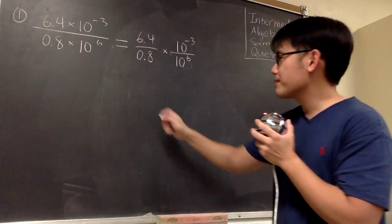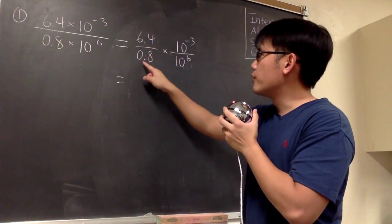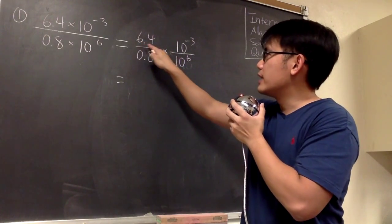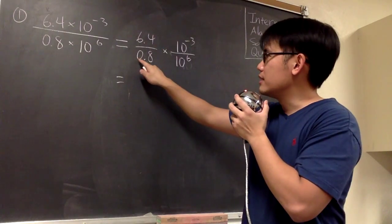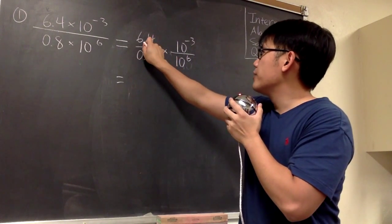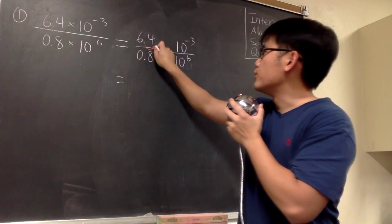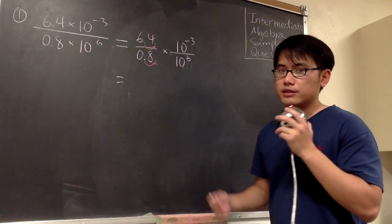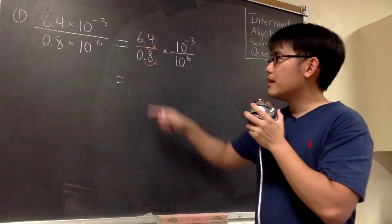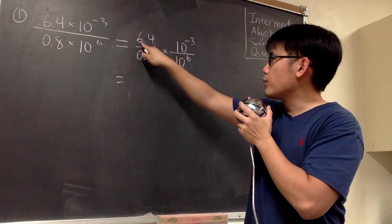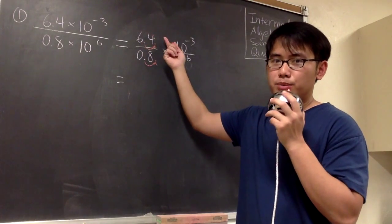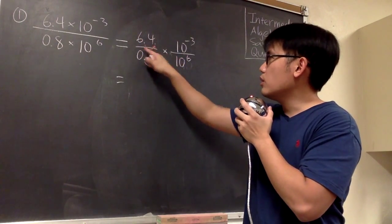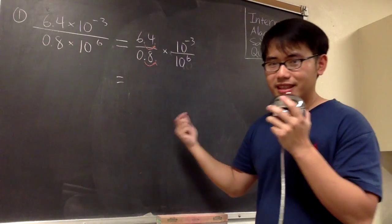Anyway, to finish this up, we first focus on 6.4 over 0.8 — we have to divide. We notice that 6.4 has one decimal place, and so does 0.8. So what I can do is move the decimal point once to the right on the top and also on the bottom. As long as you do the same on top and bottom, it's fine — this is like multiplying by 10. So I can look at this fraction as 64 over 8, which gives us 8.